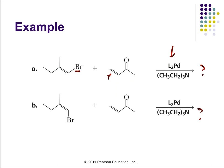So I left you off with this example, A and B. Take this halogen, add this alkene, and mix it with some palladium, and a coupling reaction will go forward. Can you predict the products?